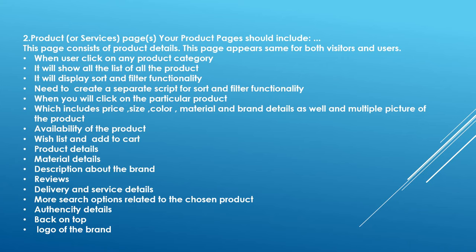Product or service page: what should be included. The page consists of product details, and the page appears the same for visitors and users. When a user clicks on any product category, it shows a list of all products and displays sort and filter functionalities — you need to create a separate script for sort and filter. Clicking on a particular product shows price, size, color, material, brand details, and multiple pictures of the product.